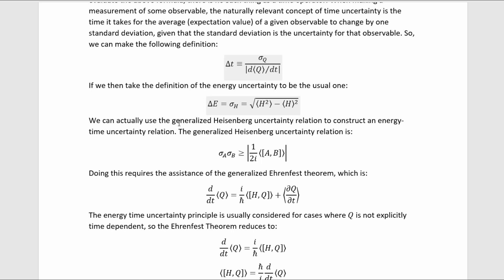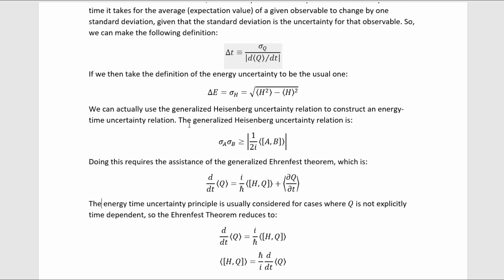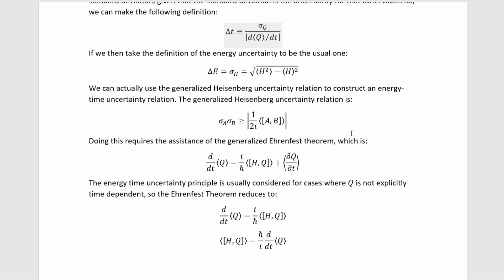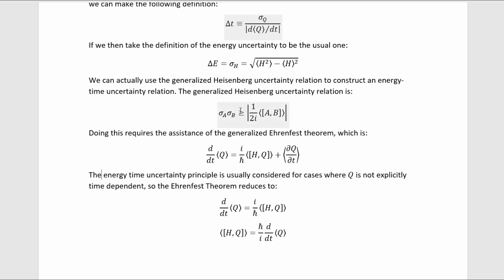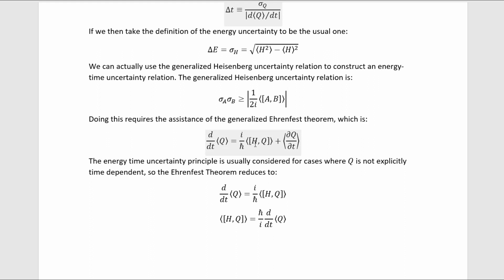we can actually use the generalized Heisenberg uncertainty relation to construct an energy-time uncertainty relation. The generalized Heisenberg uncertainty relation is this. Now in order to actually use this to get an uncertainty relation for energy and time, we need assistance of the generalized Ehrenfest theorem, which is this.